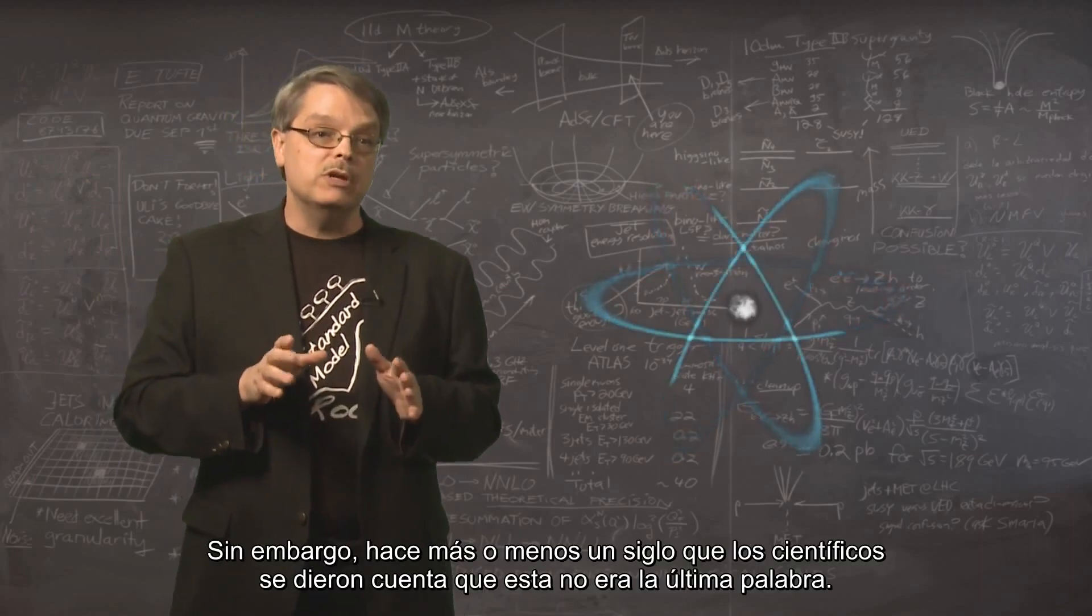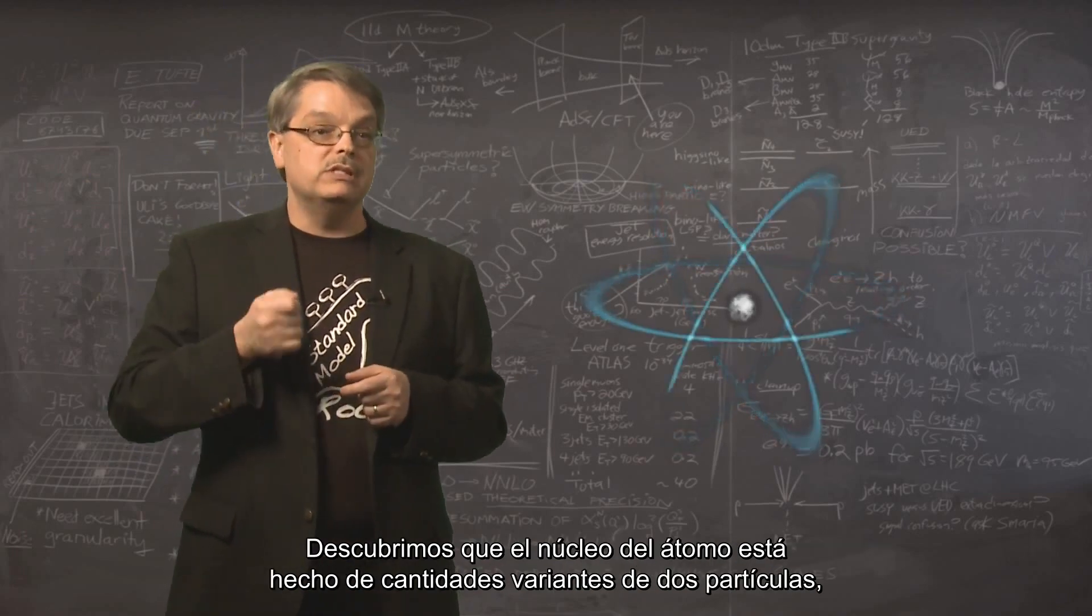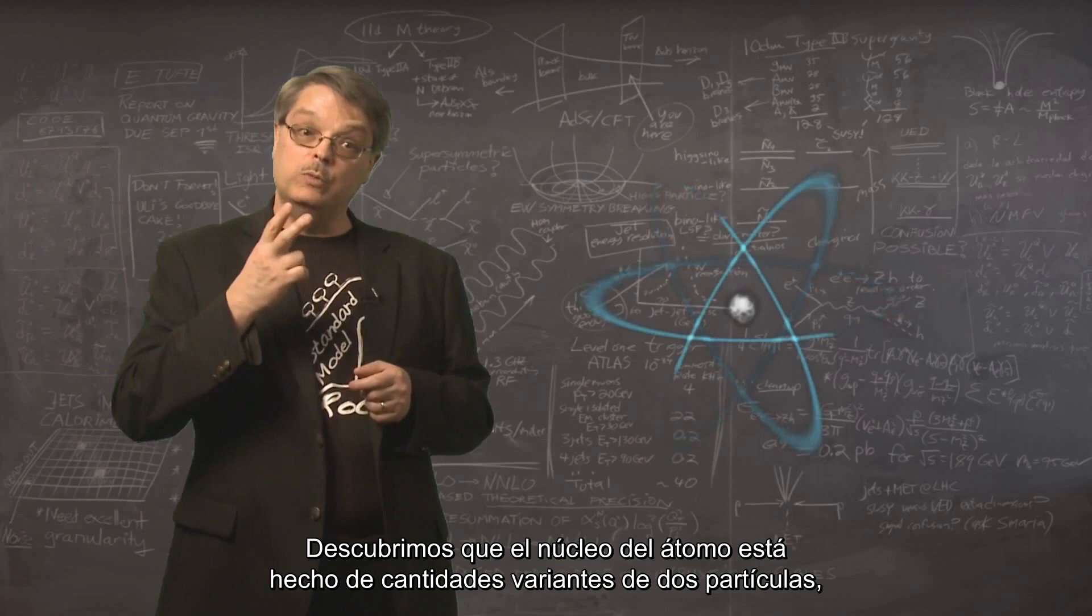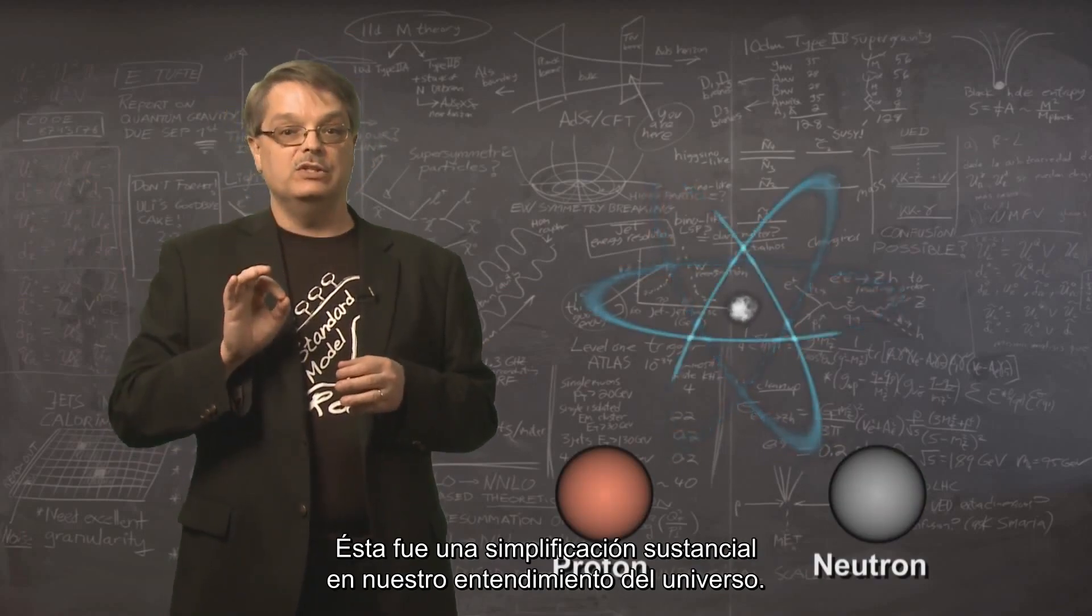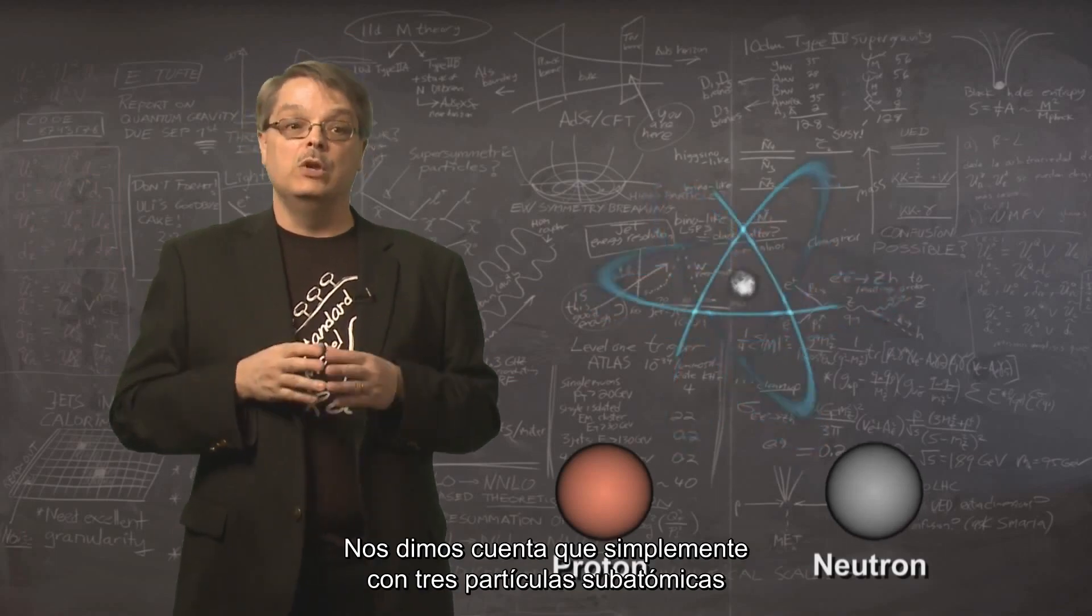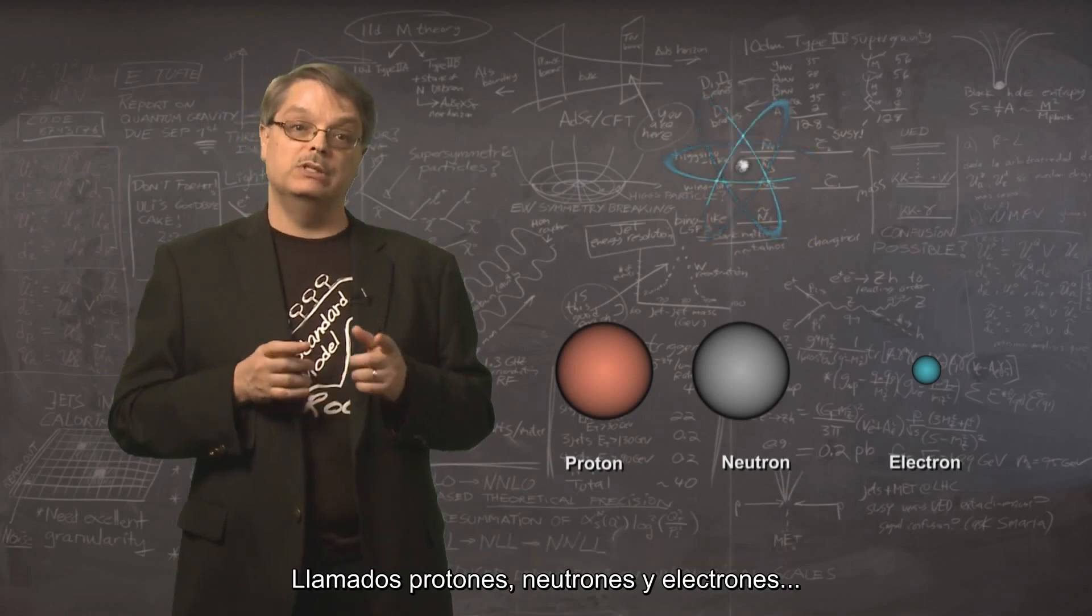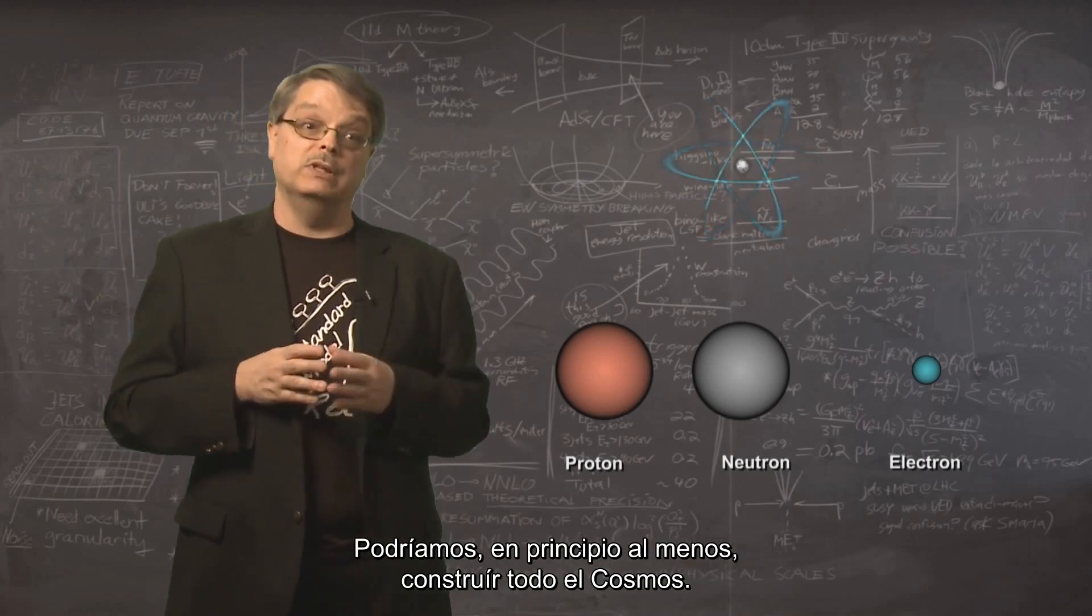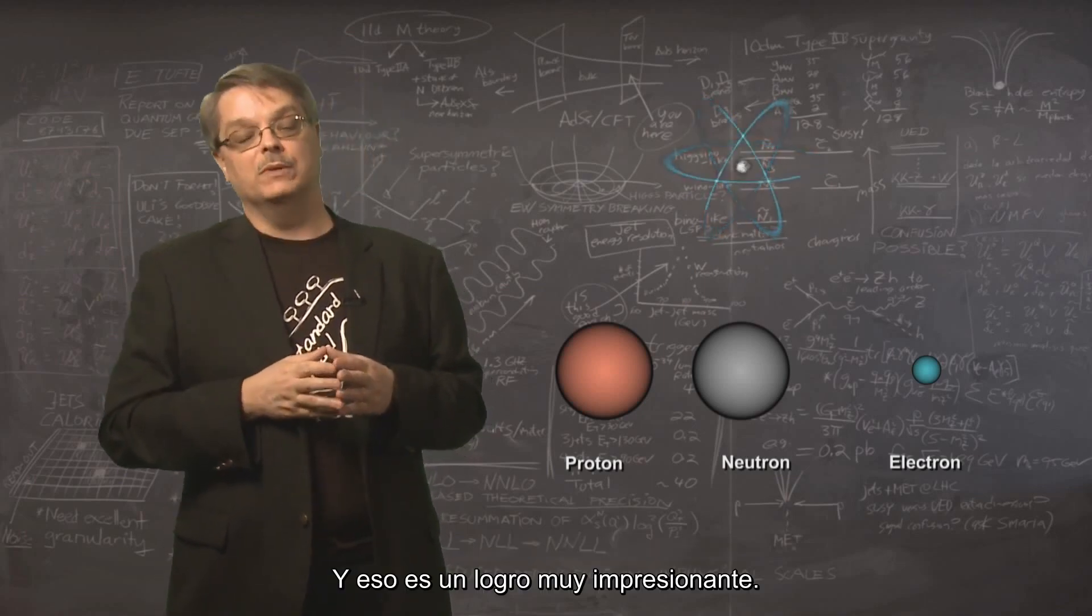However, nearly a century ago, physicists realized that this wasn't the final word. We discovered that the nucleus of the atom was made of varying numbers of two particles called protons and neutrons. This was a substantial simplification in our understanding of the universe. Rather than a hundred chemical elements, we now realized that with a mere three subatomic particles called protons, neutrons, and electrons, we could, in principle at least, construct an entire cosmos. And that is a pretty impressive achievement.